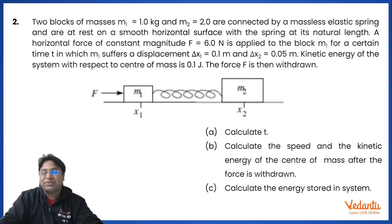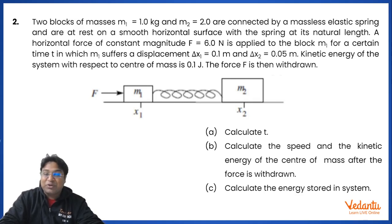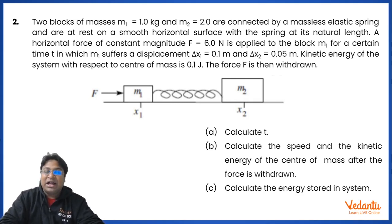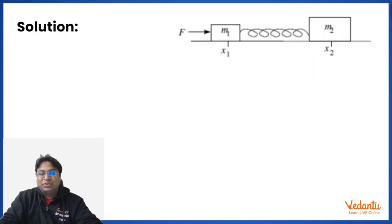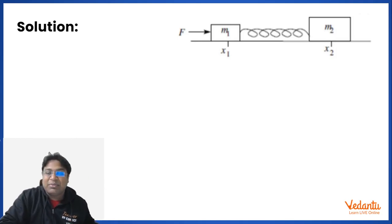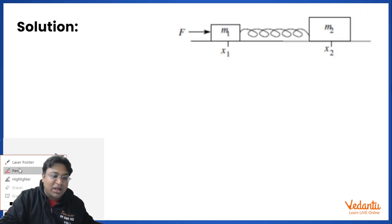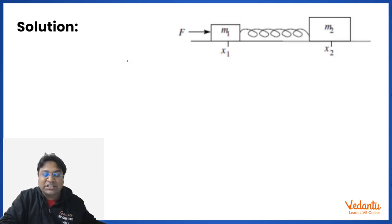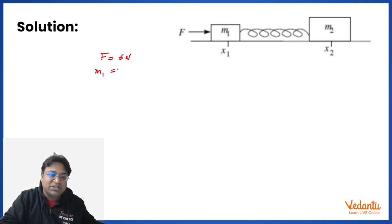These are the answers to this question. For part C, two answers have been given, corresponding to two kinds of interpretation the question may have — I'll talk about those interpretations when I solve it. The data given is: force = 6 N, M1 = 1 kg, M2 = 2 kg.